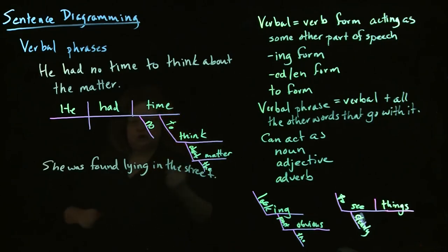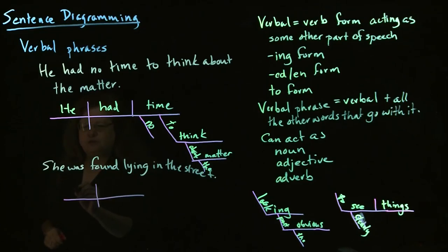So, we start with our structure again. We have, she. We have our subject, she. We have our verb, was found.